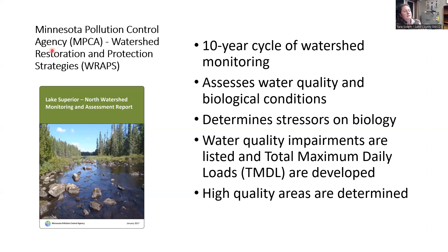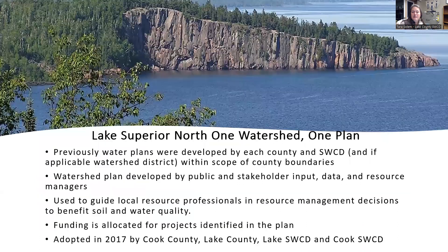There's a watershed assessment and restoration strategy that the Minnesota Pollution Control Agency does. Each of those watersheds has a 10-year cycle of watershed monitoring where they assess water quality conditions, biological fish and invertebrates. They determine if there are stressors, see if there are any impairments, and even identify where those high-quality areas exist. That data collected in the assessment report is one of the many things plugged into the One Watershed One Plan.